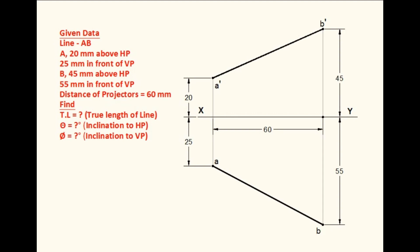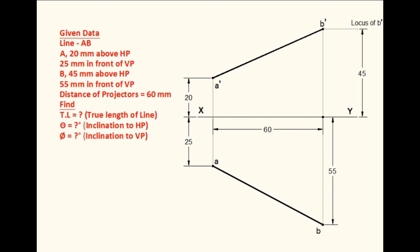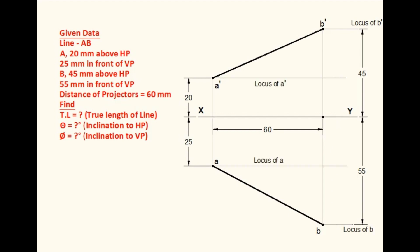Now, to find out the true length and true inclination of the line, draw a locus line through B dash, draw a locus line through B, draw a locus line through A dash, and draw a locus line through A also. With A dash as center and A dash to B dash as radius, cut an arc to meet the locus of A dash. This point is B2 dash. Draw a vertical line through B2 dash to meet the locus of B. This point is B2. Similarly, with A as center and A to B as radius, cut an arc to meet the locus of A. This point is B1.